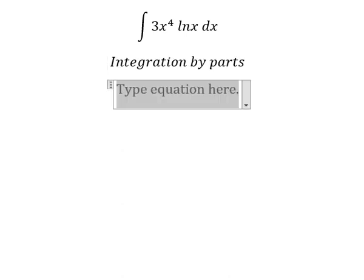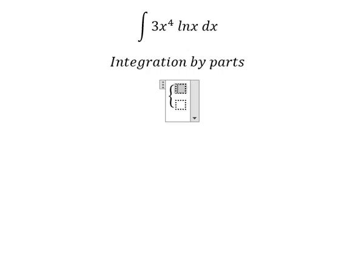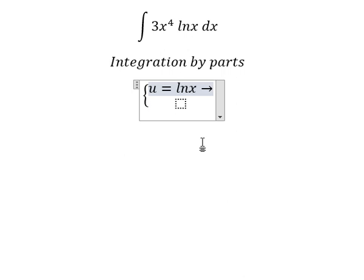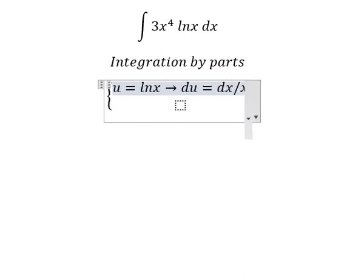We'll set u equals to ln x. Next, we need to differentiate both sides, and we have du equals dx over x.